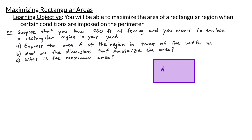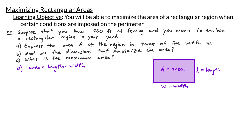Let's label some of our variables on our picture. We have capital A for area, W for the width, and L for the length of this rectangular region. In general, to find the area of a rectangle we have the relationship that area is equal to length times width. So in terms of our variables we have the equation A is equal to L times W.